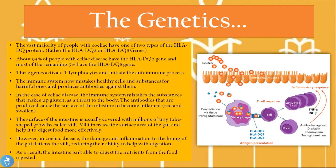Now let's talk about the genetics behind celiac disease. The vast majority of people with celiac disease have one of two types of the HLA-DQ protein — either the HLA-DQ2 or the HLA-DQ8 gene. About 95 percent of people with celiac disease have the HLA-DQ2 gene, and most of the remaining five percent have the HLA-DQ8 gene. These genes activate T lymphocytes and initiate the autoimmune process, causing the immune system to mistake healthy cells and substances for harmful ones and produce antibodies against them. In celiac disease, the immune system mistakes substances that make up gluten as a threat to the body.